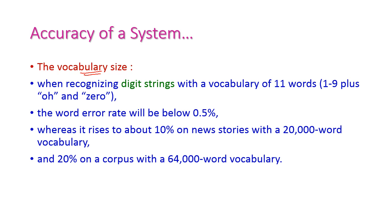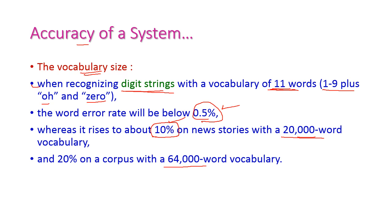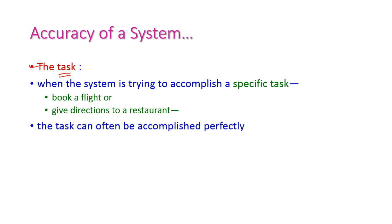Vocabulary size also affects accuracy. When recognizing digit strings with a vocabulary of 11 words (0 to 9 plus zero), the error rate is below 0.5%. With 200 words the error rate becomes 10%, and with 64,000 words the error rate increases to 20%. Accuracy is also affected by the task — a task-based system such as booking a flight or giving directions to a restaurant will have very high accuracy, whereas a multitasking system will have very low accuracy.